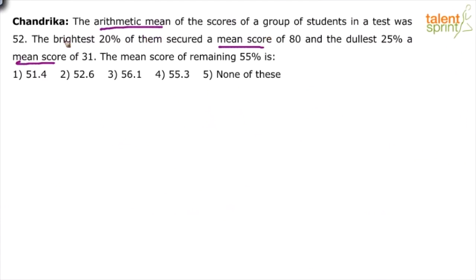The average of the entire group is 52. Forget about brightest or dullest, that doesn't matter for us. 20 percent of them have scored an average of 80, 25 percent of them have scored an average of 31. What is the average score of the remaining 55 percent?